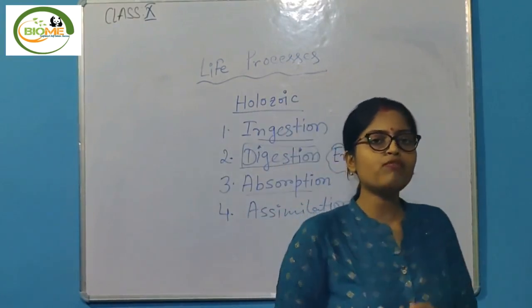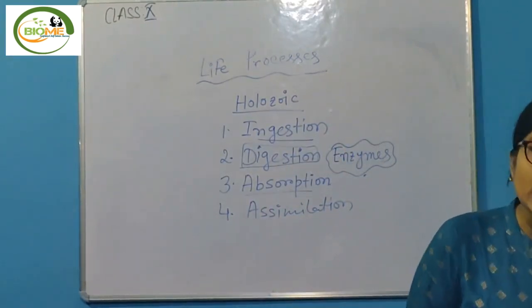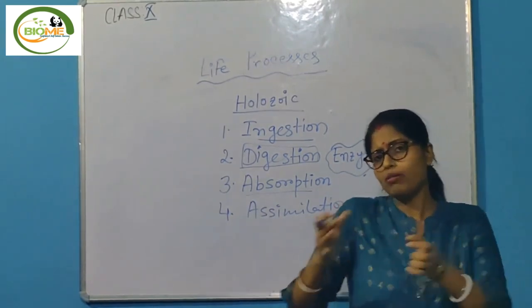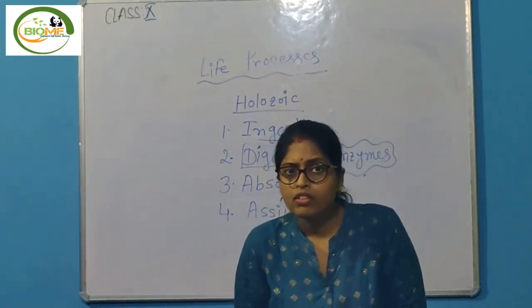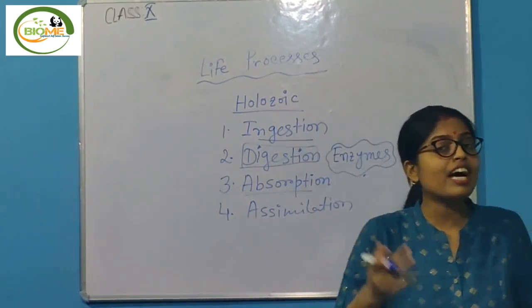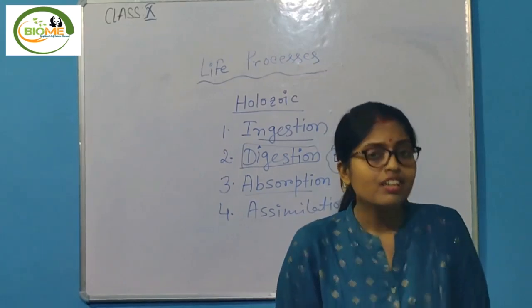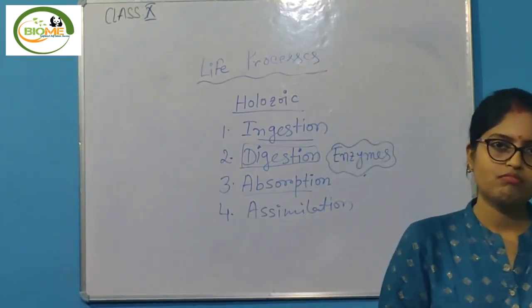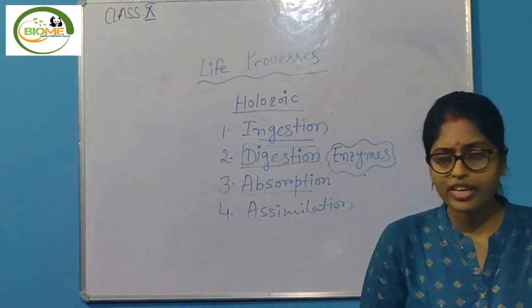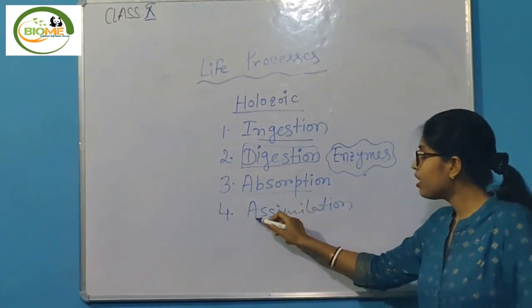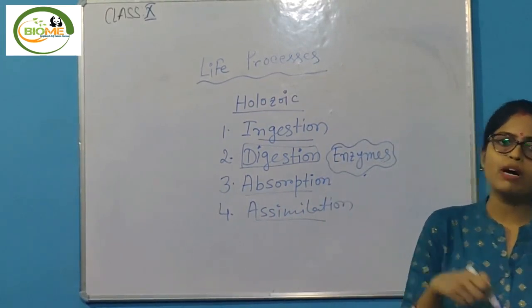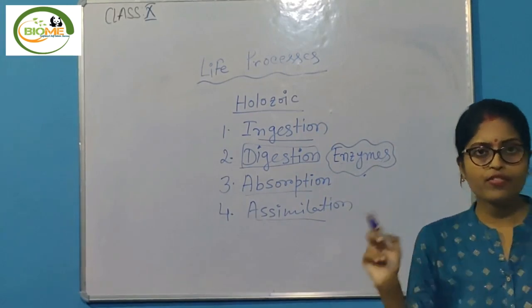Step four is assimilation. The simple form absorbed by the cells — a small portion is stored for future use to synthesize the protoplasm, meaning the nucleus and cytoplasm, the essential parts. So assimilation means some amount is stored for future use.